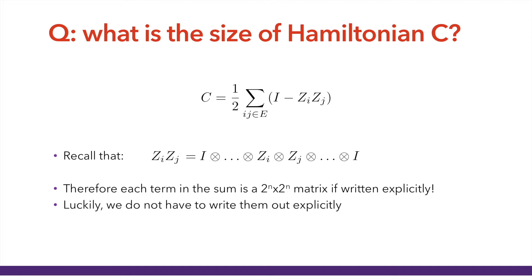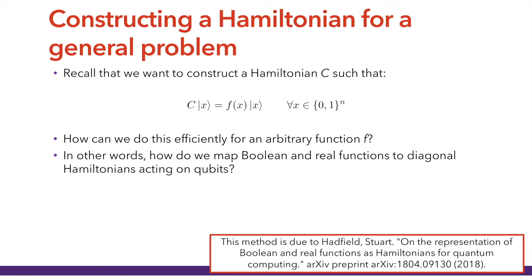But this is not a very general principle yet — what is the general rule for doing this mapping? I've given you the trick of mapping binary variables s_i onto the spectrum of Pauli Z, but what is the general rule? If we have some function f(x) on the Boolean hypercube, how do we construct a diagonal Hamiltonian acting on qubits that faithfully represents f(x)? I'm going to show you a general framework for doing this that relies on the Fourier analysis of Boolean functions.